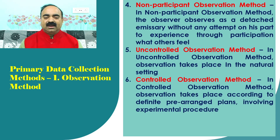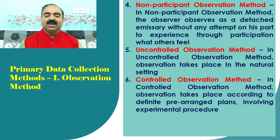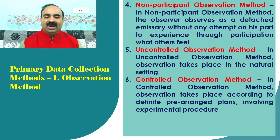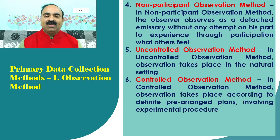Six: controlled observation method. In the controlled observation method, observation takes place according to definite pre-arranged plans involving experimental procedure. Dear students, in this video I have dealt with observation method, advantages of observation method, disadvantages of observation method, and different types of observation method. Thank you.